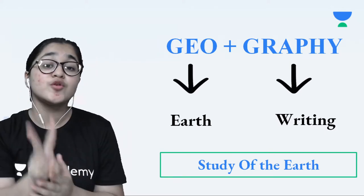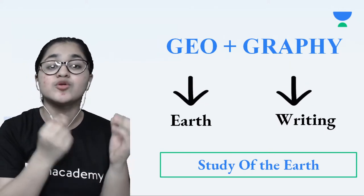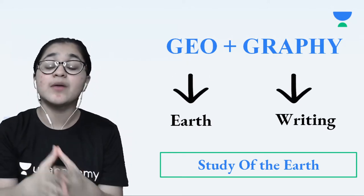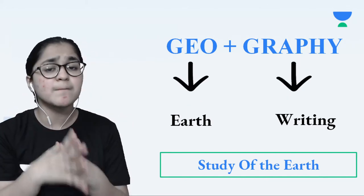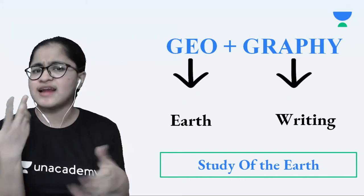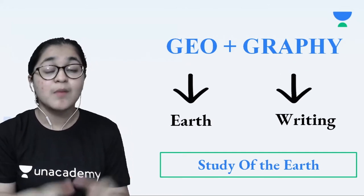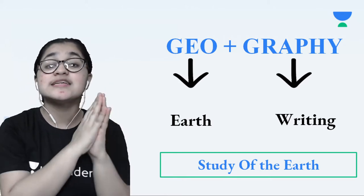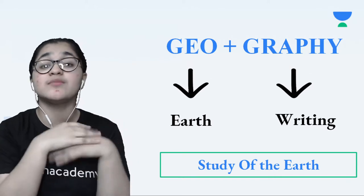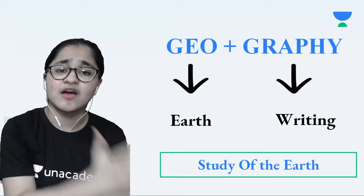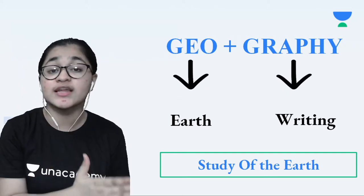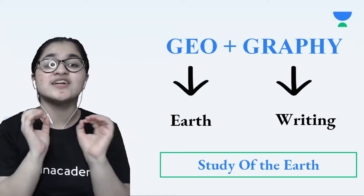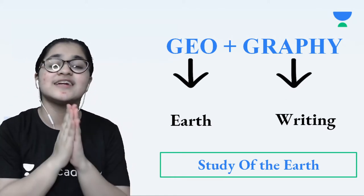Geography is made up of two Greek words — 'geo' which means earth, and 'grafi' which means writing. So geography is basically writing about the earth, or description of the earth. But when we combine both terms, geography means 'study of the earth' — studying everything about the earth, whether it is vegetation, climate, continents, or oceans. Everything A to Z related to earth comes under geography.